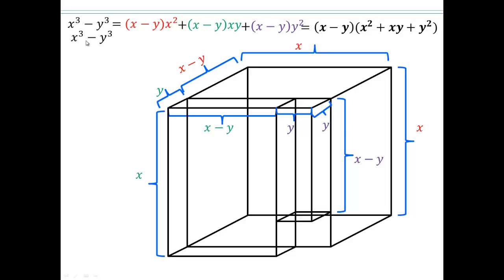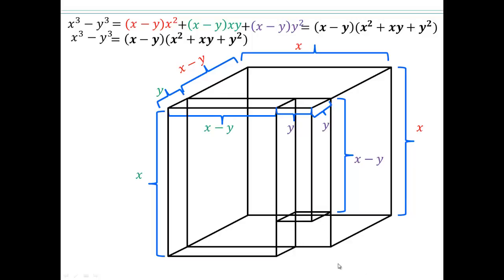So x cubed minus y cubed is going to be x minus y times x squared plus xy plus y squared. This would be very good to memorize. Difference of cubes factors as x minus y times x squared plus xy plus y squared. That's because of how we put these pieces together — you can see how the y cubed is missing. So we have x cubed minus y cubed made up of three rectangular prisms.